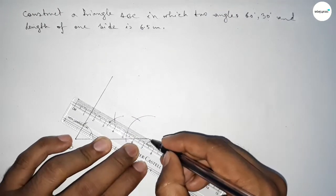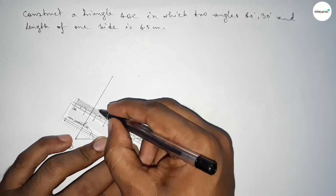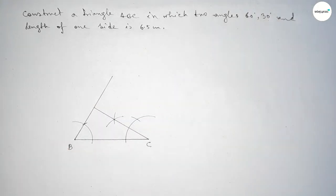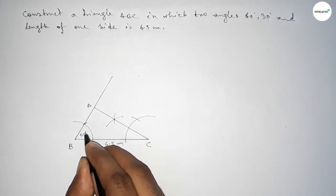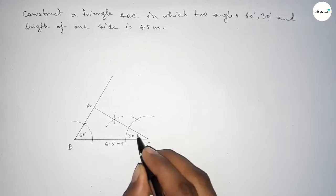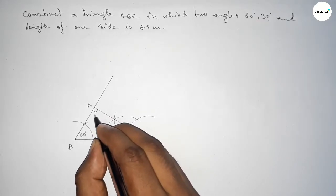Now joining this line to get here a 30 degree angle, and both the lines intersect at point A. So this side is 6.5 centimeters, this angle 60 degrees, this angle 30 degrees, and this angle obviously 90.